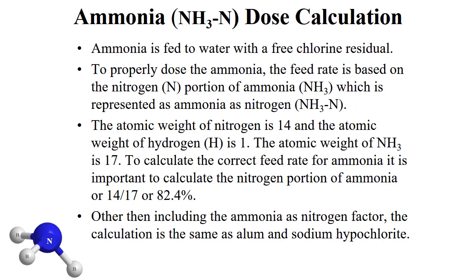Another common chemical at water treatment plants is ammonia. Calculating the feed rate is similar to alum and hypo, but there is a slight difference. Ammonia is fed to water with a free chlorine residual with the goal of creating monochloramine. To properly dose the ammonia, the feed rate is based on the nitrogen portion of ammonia, represented as ammonia as nitrogen. The atomic weight of nitrogen is 14, hydrogen is 1, and ammonia is 17. So the nitrogen portion is 14 divided by 17, or 82.4%. Other than adding this ammonia-as-nitrogen factor, the ammonia feed rate calculation is the same as alum and sodium hypochlorite.